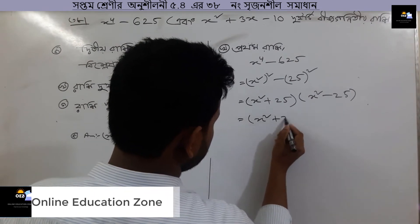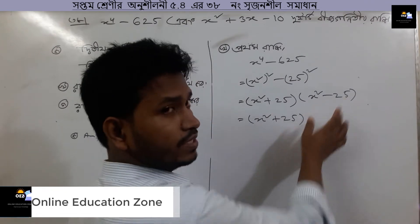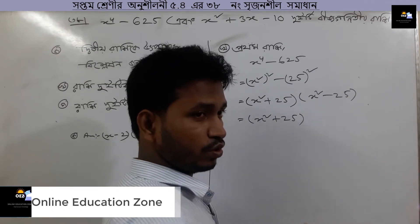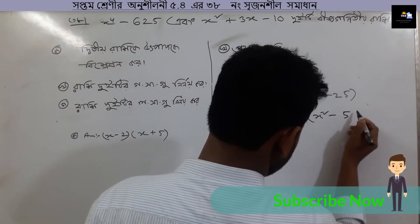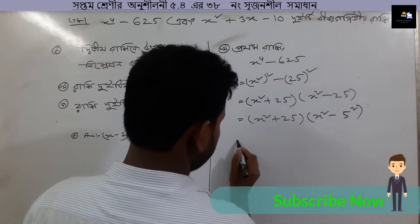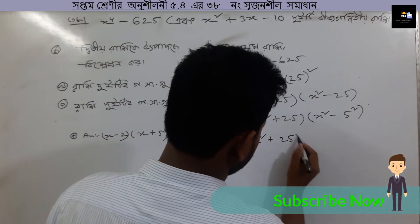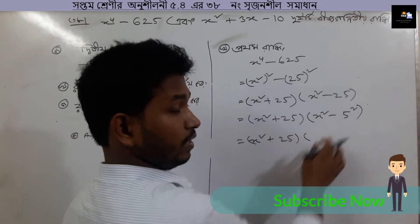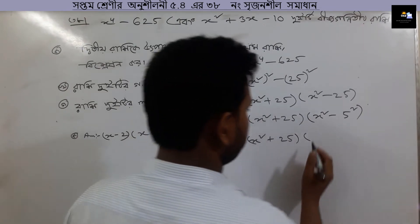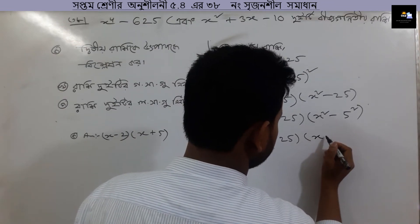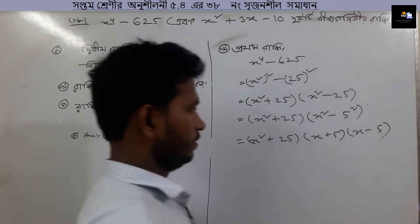X squared plus 25. Now we will take minus here, so we will take 25, so we will take x squared minus 25. So x squared plus 25 into a, and then we will take a squared minus b squared — giving x minus 5.